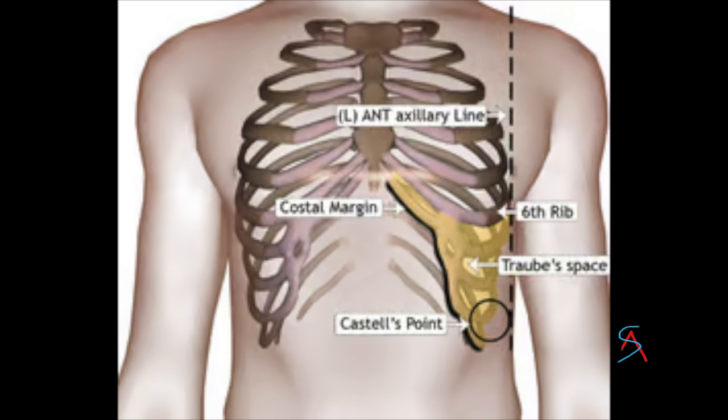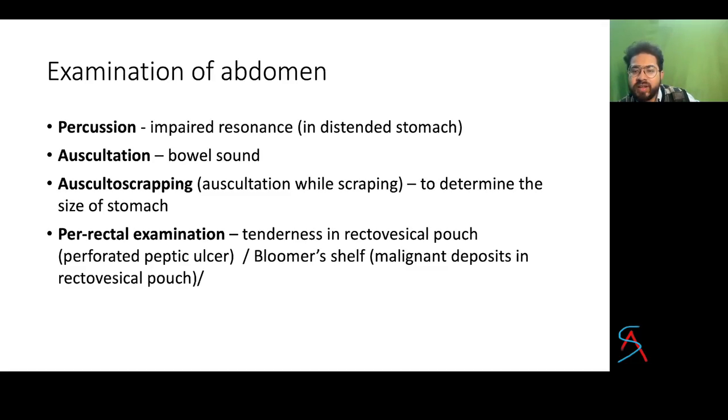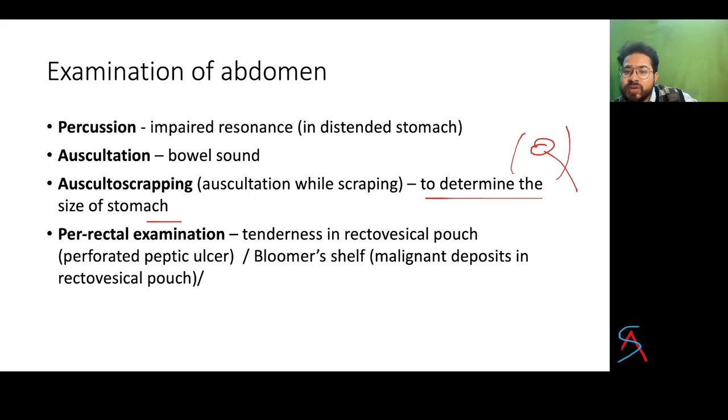Succession splash: catch a fold of skin over the epigastric region and shake — you can hear a splashing or gargling sound without a stethoscope. It is seen in gastric outlet obstruction. Traube's space is bordered by the sixth rib at mid-clavicular line, anterior and middle axillary lines, and the ninth rib. If Traube's space is dull, suspect stomach malignancy or splenomegaly, as it normally contains the fundus of the stomach. Auscultate around the umbilicus for bowel sounds. Auscultatory scraping helps outline the stomach.